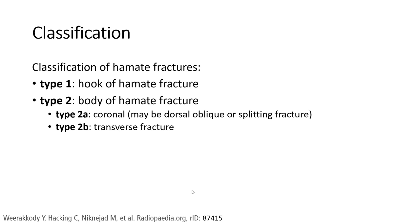Classification of hamate fracture. Type 1: Hook of hamate fracture. Type 2: Body of hamate fracture. The body of hamate fracture is divided into A and B. Type A is a coronal, oblique, or splitting fracture. Type B is a transverse fracture.